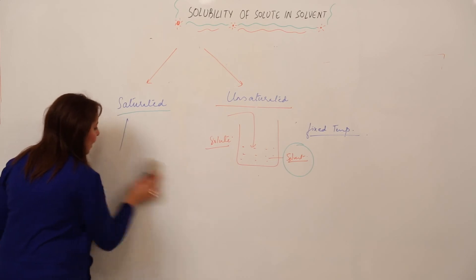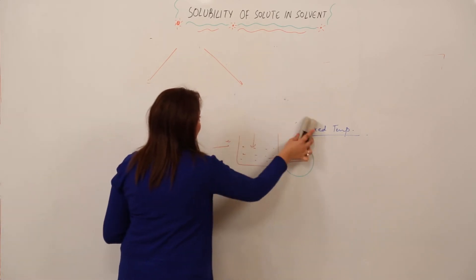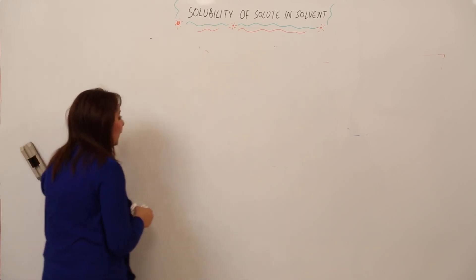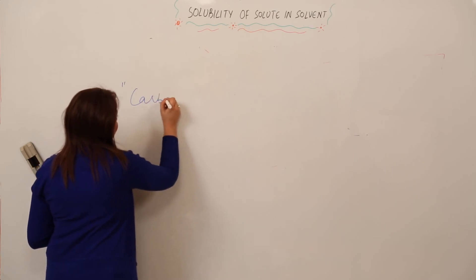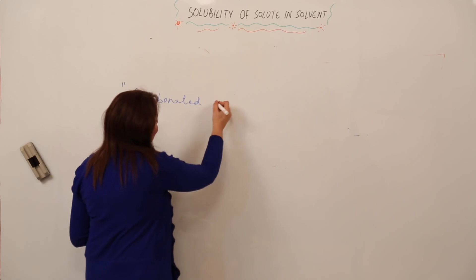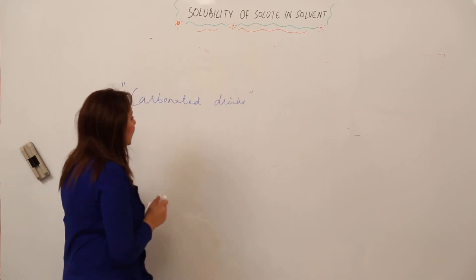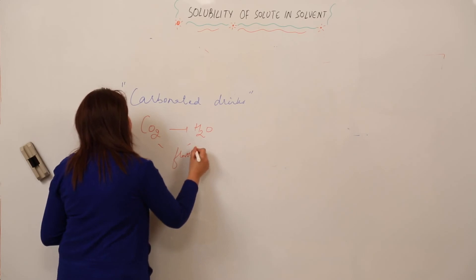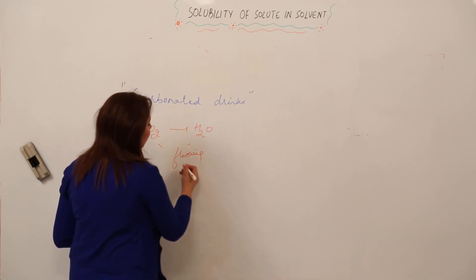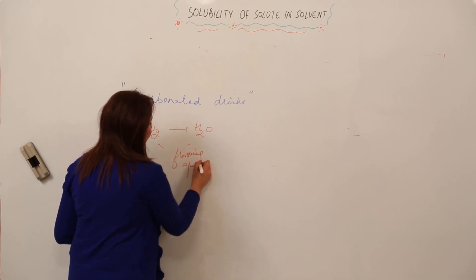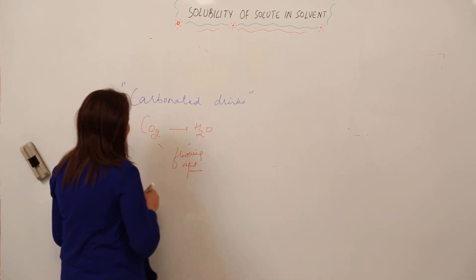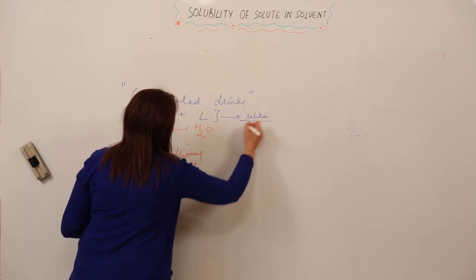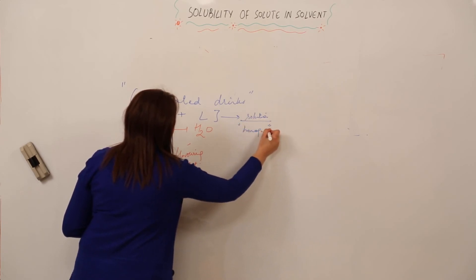Now we'll take one more topic: we discussed in a previous lecture that we have mixtures — solutions — in which gases are dissolved in liquid. I'm talking about carbonated drinks that we all relish. In carbonated drinks, we have CO₂ dissolved in water plus some flavoring agents — that is why we get Coke, Sprite in different flavors. So the solute is a gas and the solvent is a liquid, forming a homogeneous solution.